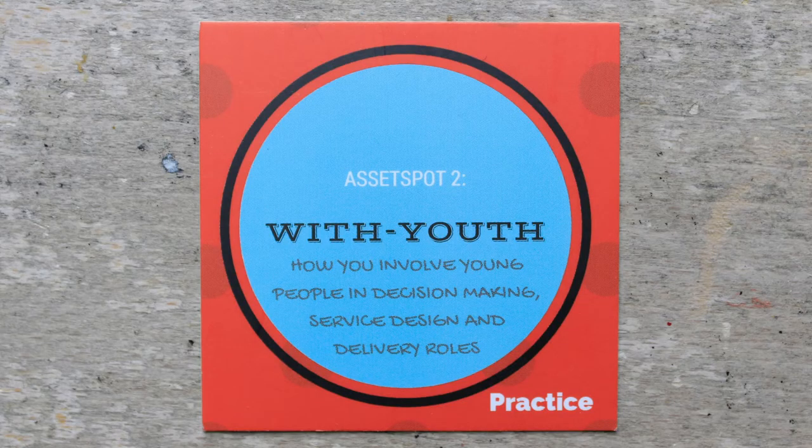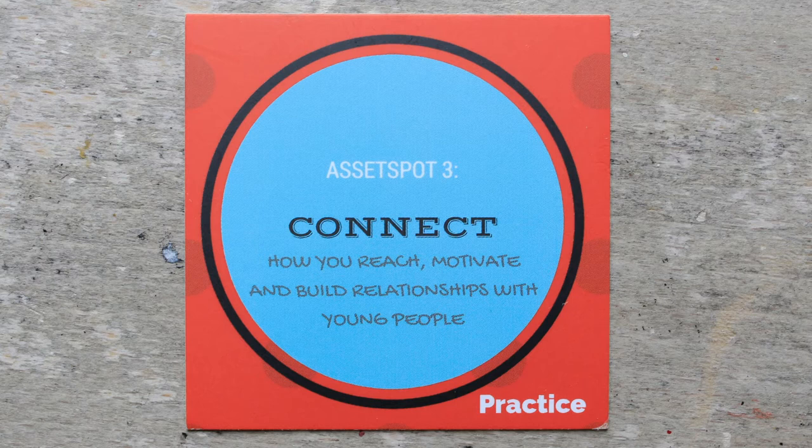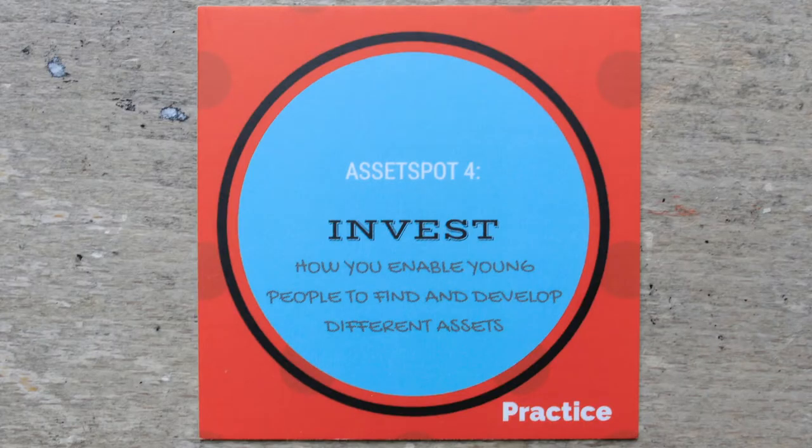Asset Spot number two is about With Youth — how organisations work in meaningful ways with young people and how young people are embedded within the approach. Asset Spot number three is Connect, about the importance of building meaningful relationships and creating feelings of trust and connection at a very early stage. Asset Spot number four is Invest, which covers the core offer for young people — what enables them to find their assets, develop those assets, and progress in their lives.